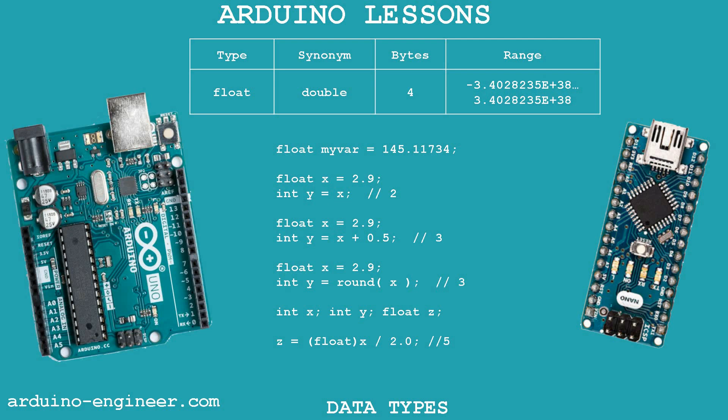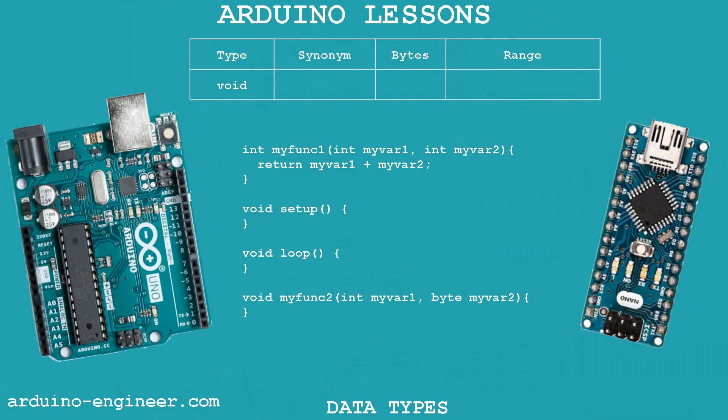The double type on other platforms allows you to get values of numbers with an accuracy up to 30 decimal places, but for Arduino this type is completely similar to float. The void type is applicable to functions – it means that the function does not return any value. For comparison, one function is shown returning an int value, and three functions that return no value declared with a void type.